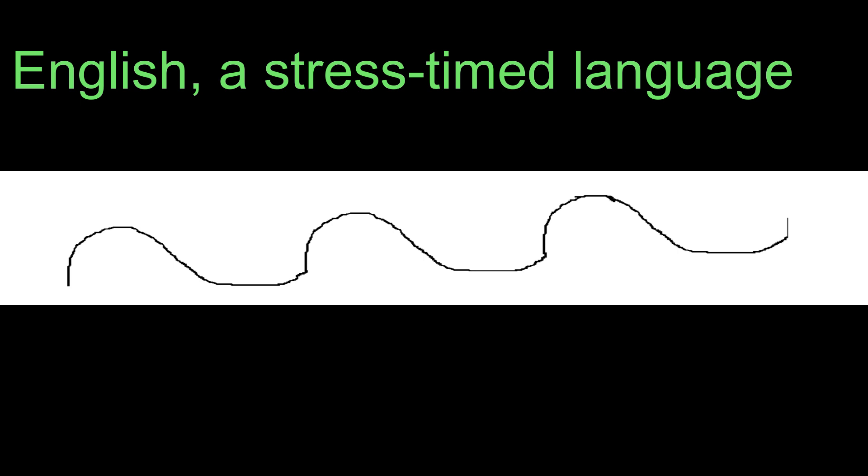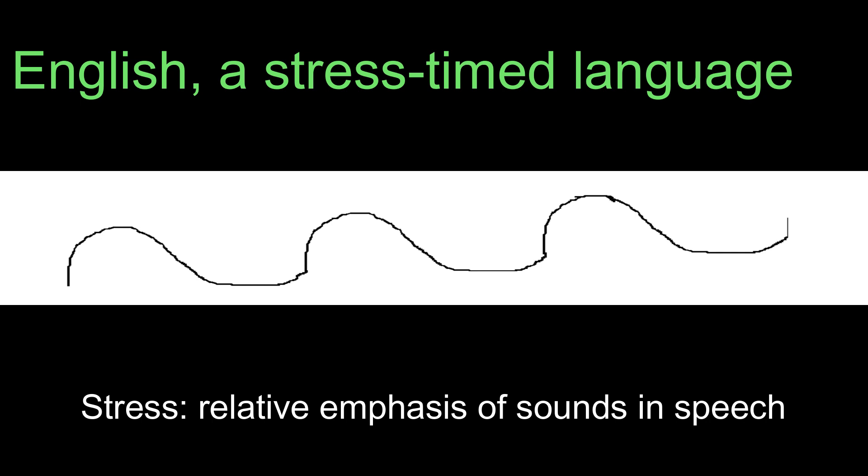English is not a syllable-timed language. In English, some syllables in words and some words in sentences are emphasized more than other syllables in words and other words in sentences. This relative emphasis of sound in speech is called stress.